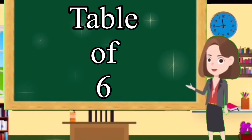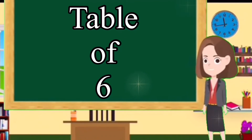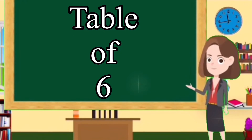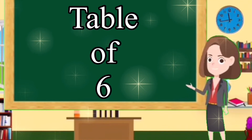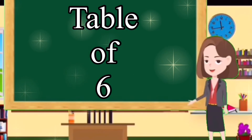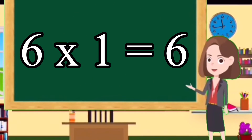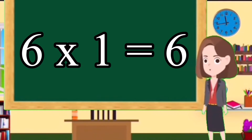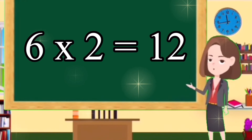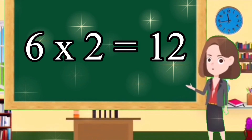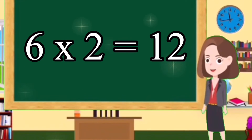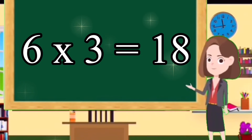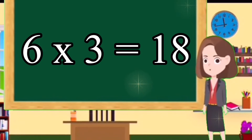Table of 6. Six ones are six. Six twos are twelve. Six threes are eighteen.